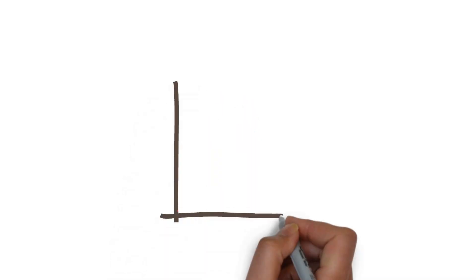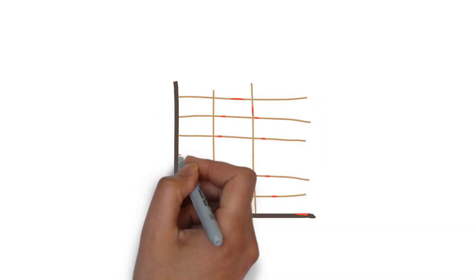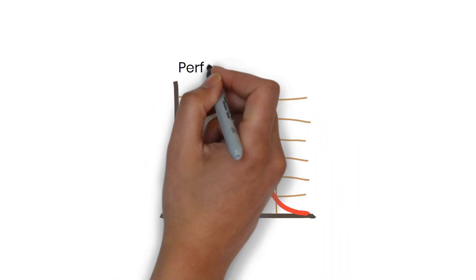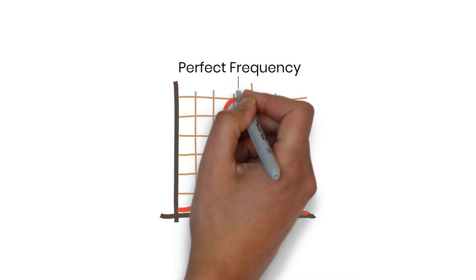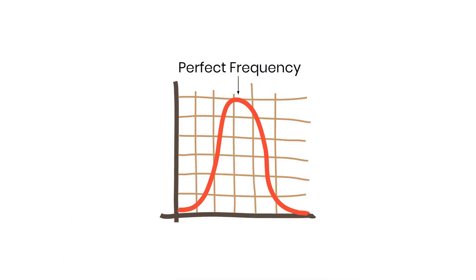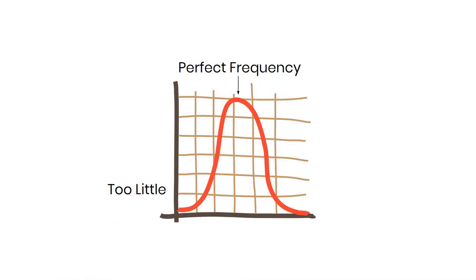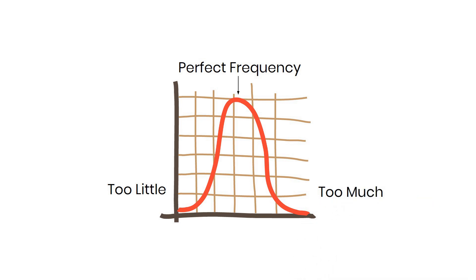You want to think of every single process you have as having a U-curve. At the top of that U-curve is going to be the optimal time to do that process. On the left and the right are when you're doing it too much or when you're doing it too little.